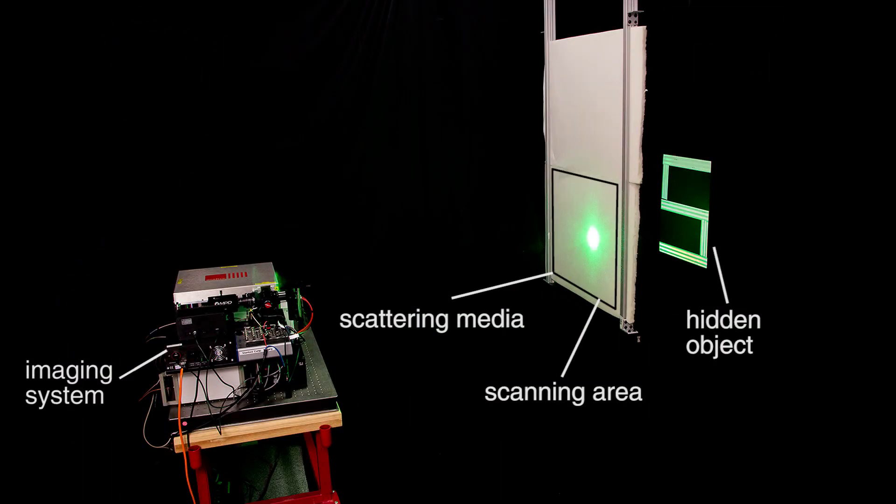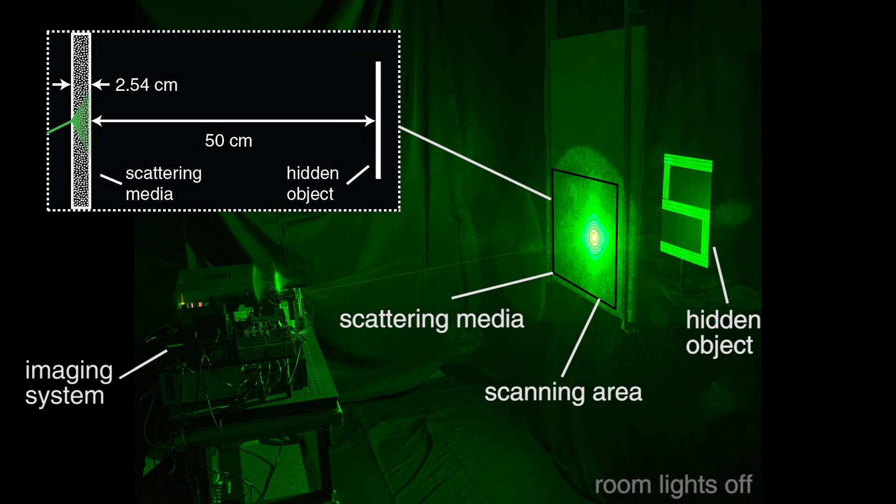Our experimental setup captures results by illuminating and imaging points on the surface of a 2.5 cm thick layer of polyurethane foam. A hidden object is placed approximately 50 cm behind the scattering layer.